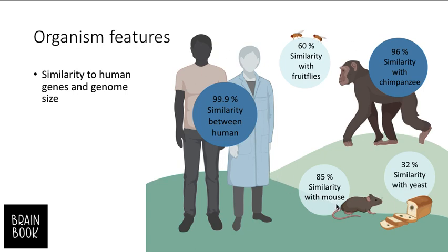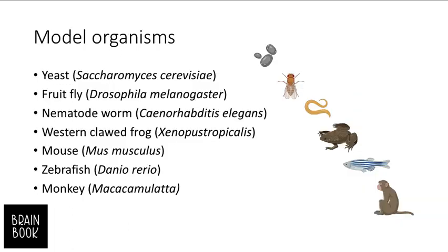Scientists and researchers may prefer one model organism over another by considering different aspects and criteria. We have several model organisms, and to get familiar with them, here is a short list: yeast as a eukaryotic model organism, a fruit fly, a nematode worm, a western clawed frog, mouse, zebrafish, and also monkey. These are different organisms being considered as models for study based on their different features.